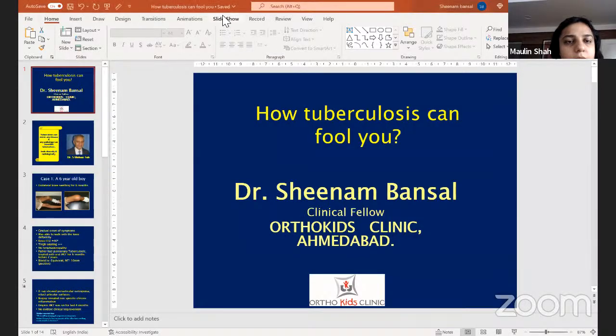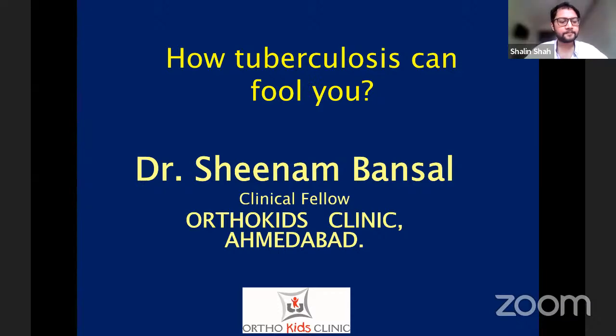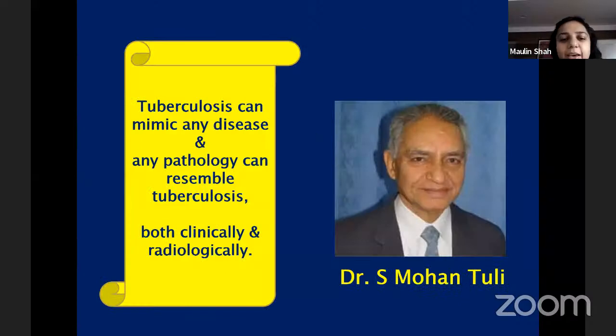Dr. Sheenam presents two cases. As rightly said, tuberculosis can mimic any disease and any pathology can resemble TB, both clinically and radiologically. Case 1: A six-year-old boy with unilateral knee swelling for six months, fixed flexion deformity of 40 degrees, gradual onset, able to walk, thigh wasting, no lymphadenopathy. Father had pulmonary TB treated with oral ATT for six months two years prior. Blood investigations were equivocal and Mantoux test was positive.